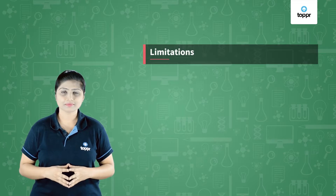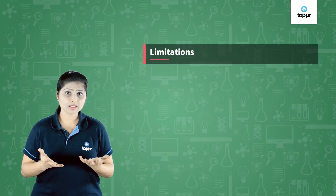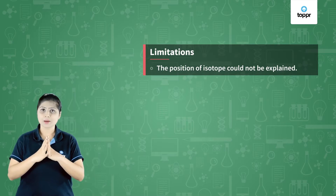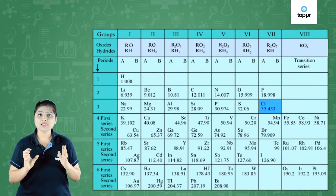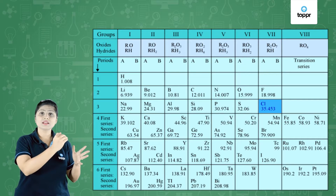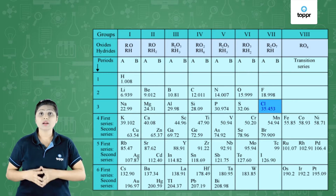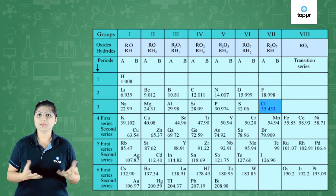After the discovery of such a brilliant table, there were certain flaws. Let us see what are the limitations of this table. This table was arranged according to the increasing order of the atomic masses of the elements, but there was no information about the isotopes of the elements. For example, chlorine has two isotopes — one isotope has mass 35 whereas the other isotope has mass 37. But chlorine-35 was placed in the table and chlorine-37 was nowhere. So no information about the isotopes was given, and the position of the isotopes could not be explained.